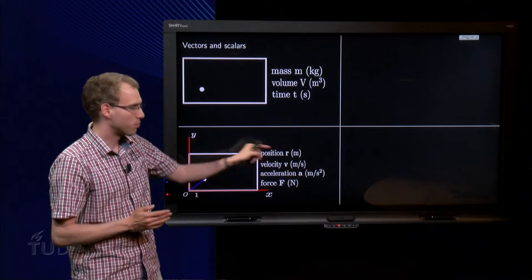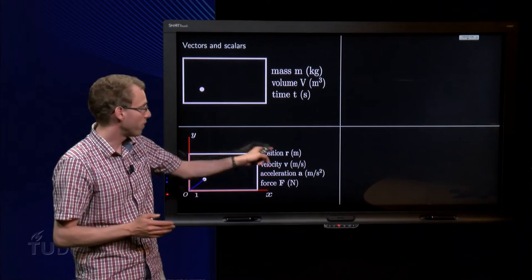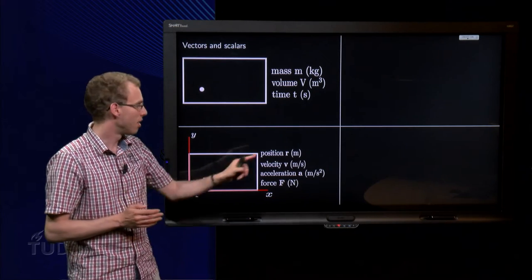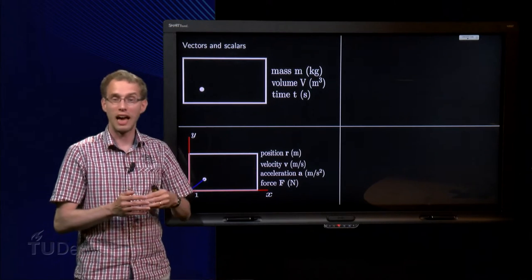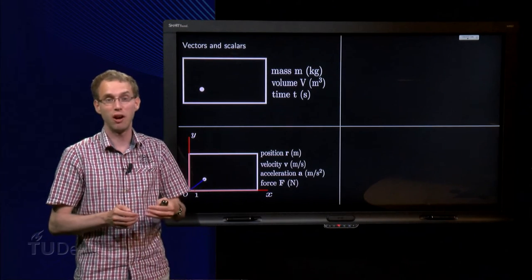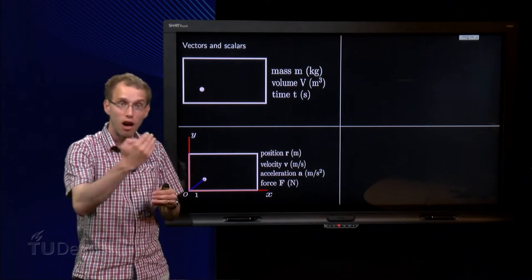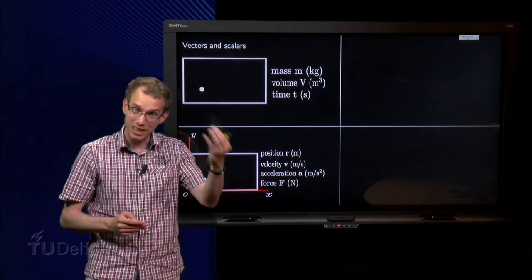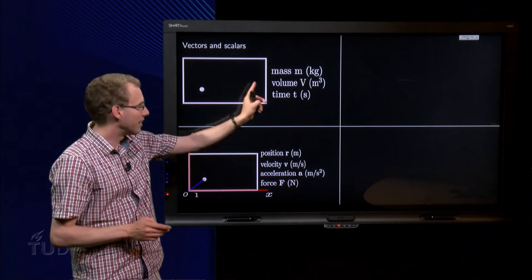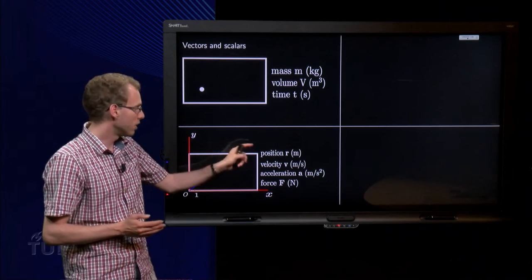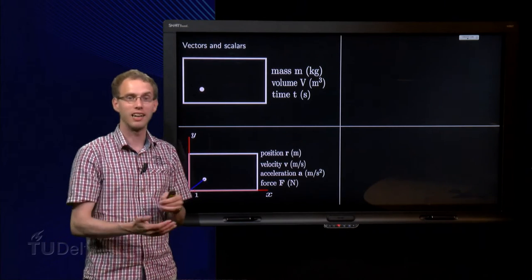For vector quantities, like position, we will use boldface, and normal for scalar quantities. So vector quantities have more components, have both size and a direction. You have to tell not just how far you are traveling, starting at the origin, but also in which direction you are traveling. And that is the difference with scalars, which only have a magnitude. This one has both a magnitude and a direction.